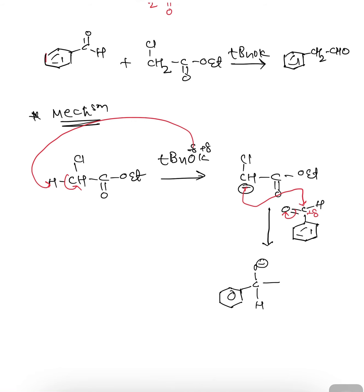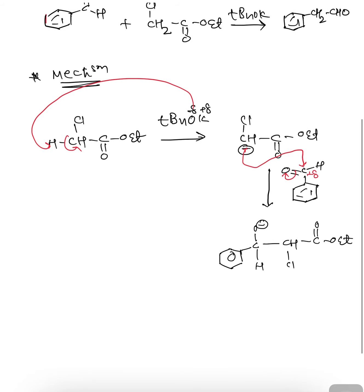In the intermediate, the carbon adjacent to the O⁻ carries a Cl and a COOEt group. The negatively charged oxygen then makes an attack onto the adjacent carbon, with the chloride acting as a better leaving group and being eliminated from the molecule. This results in the formation of an epoxide ring — a three-membered oxygen ring.